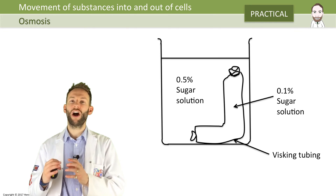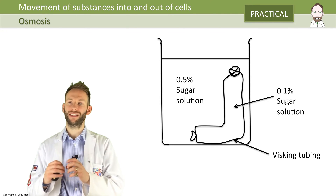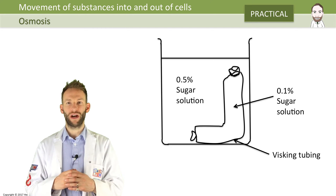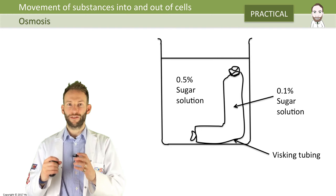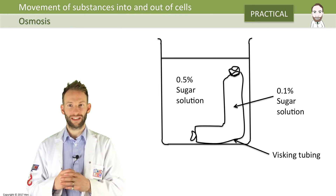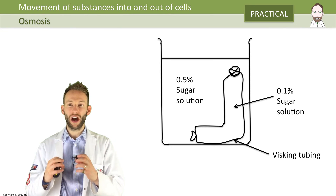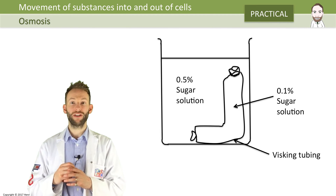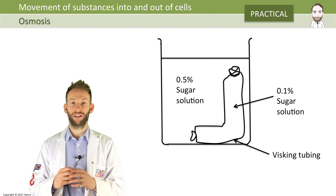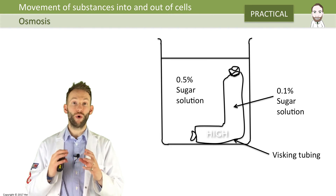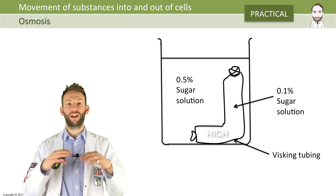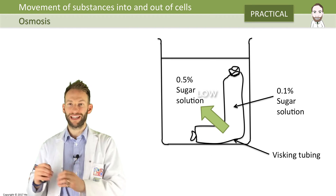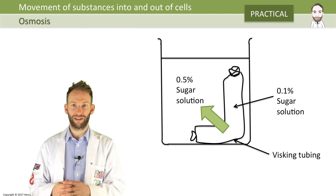So which one has the highest water potential — inside this visking tubing or outside? Well, water moves from a high water potential to a low water potential. The area with the highest water potential here is inside the visking tubing, because it's only got 0.1% sugar. The outside has got more sugar, and more sugar means lower water potential. So water moves out from inside the visking tubing to the solution outside.